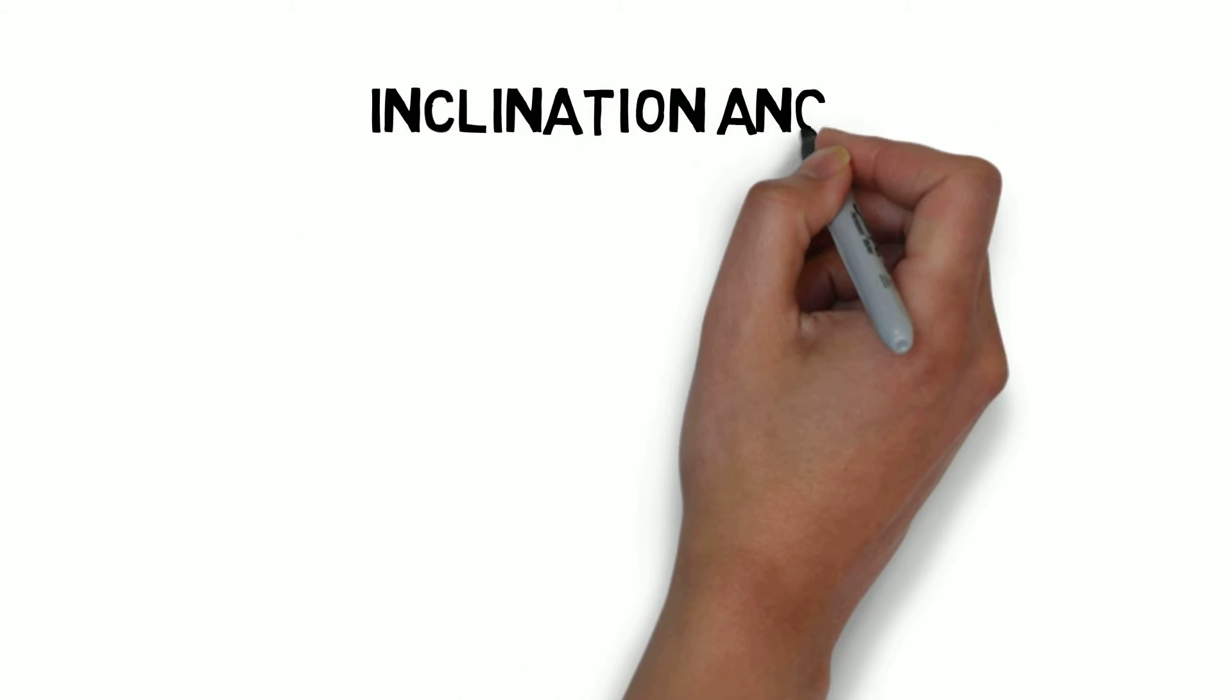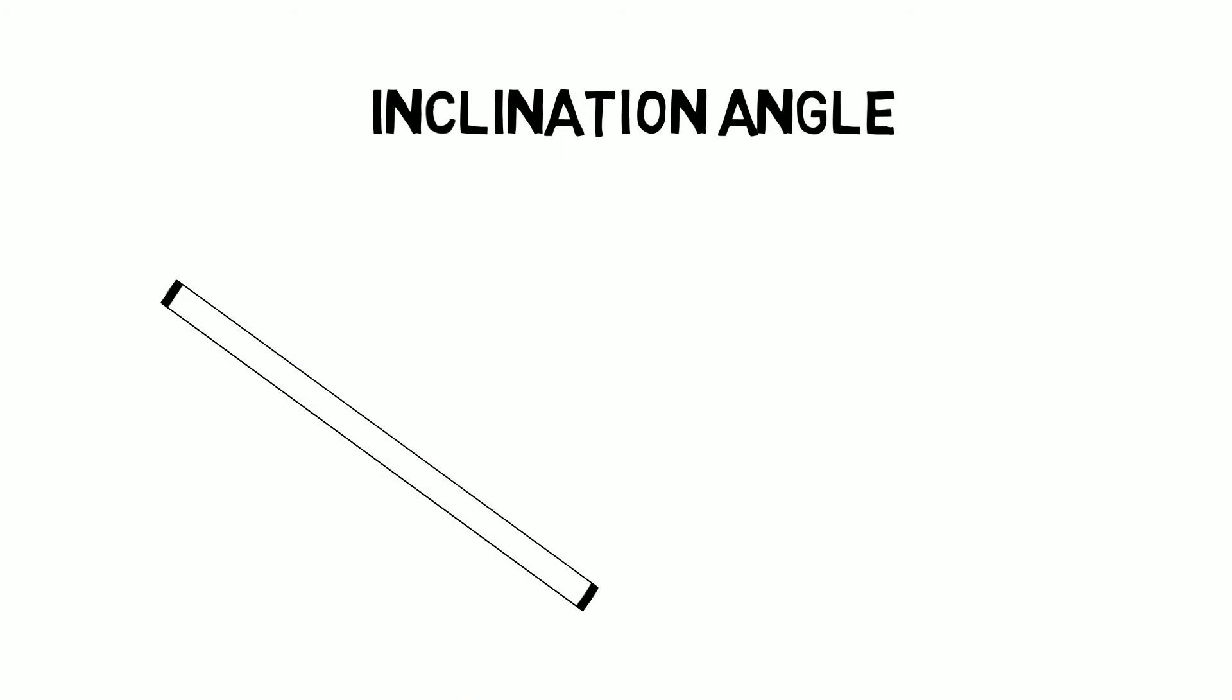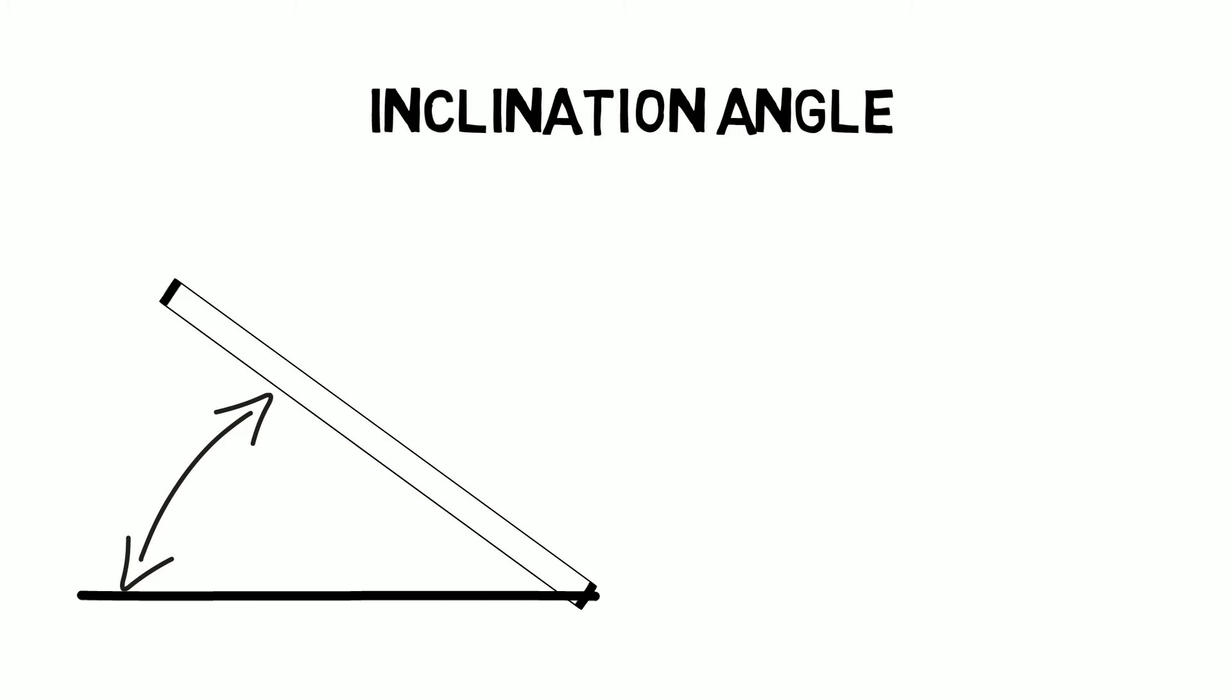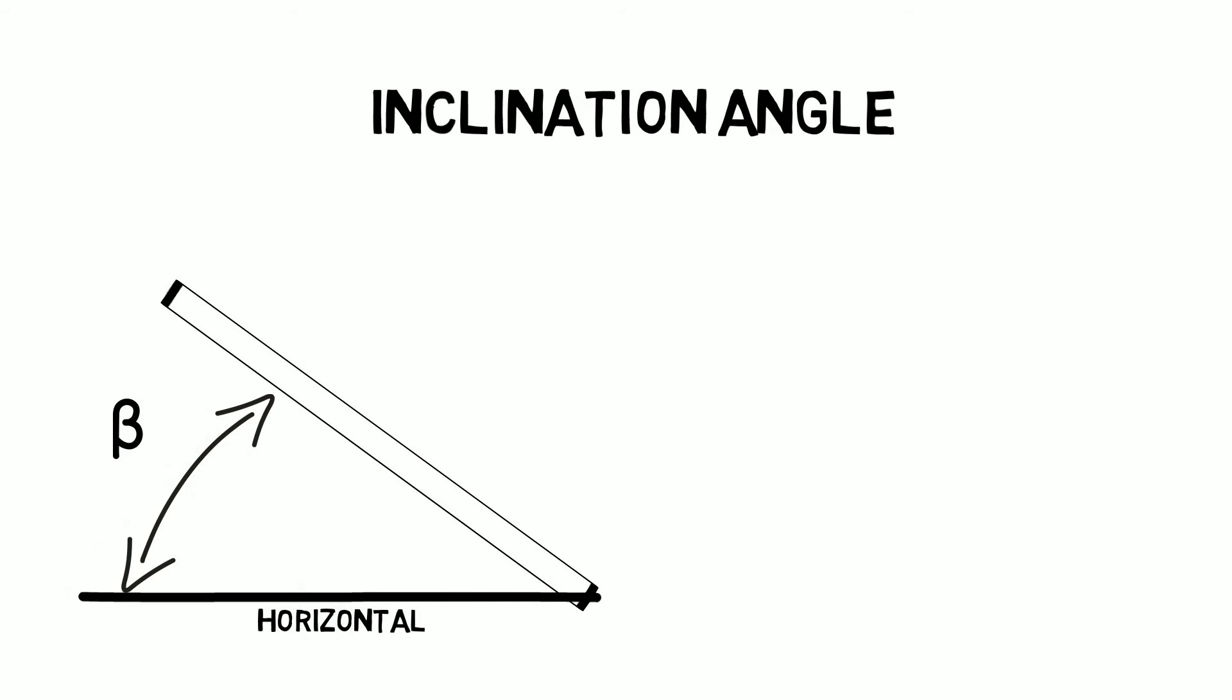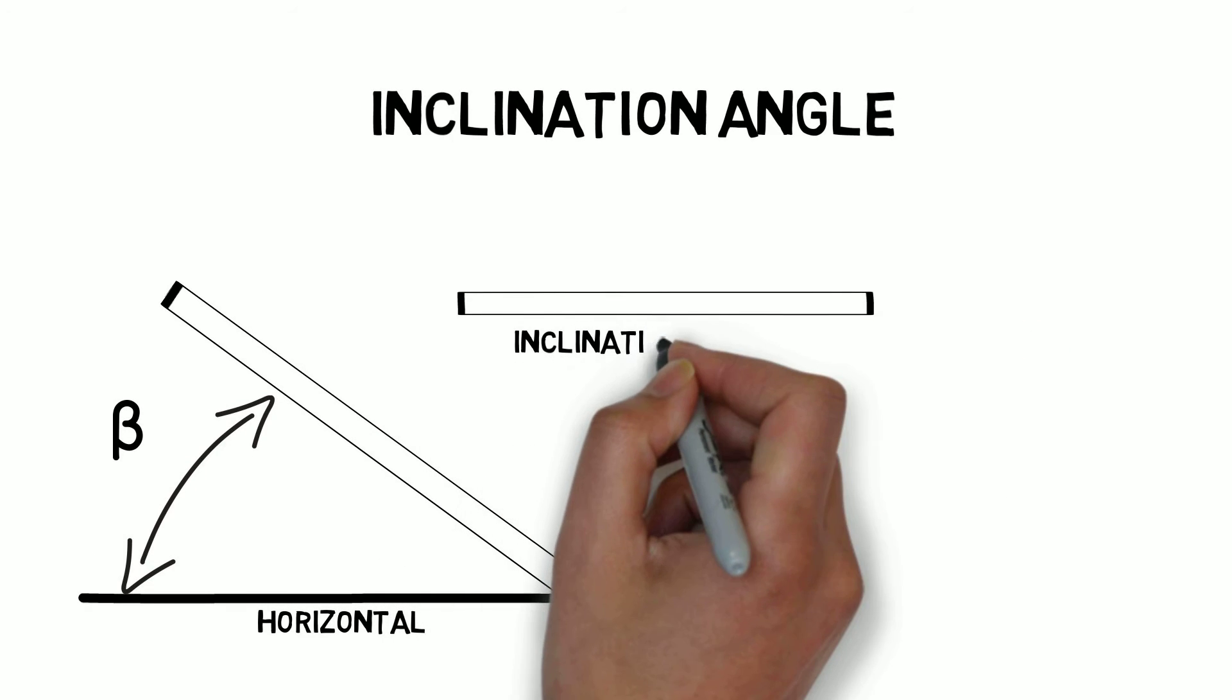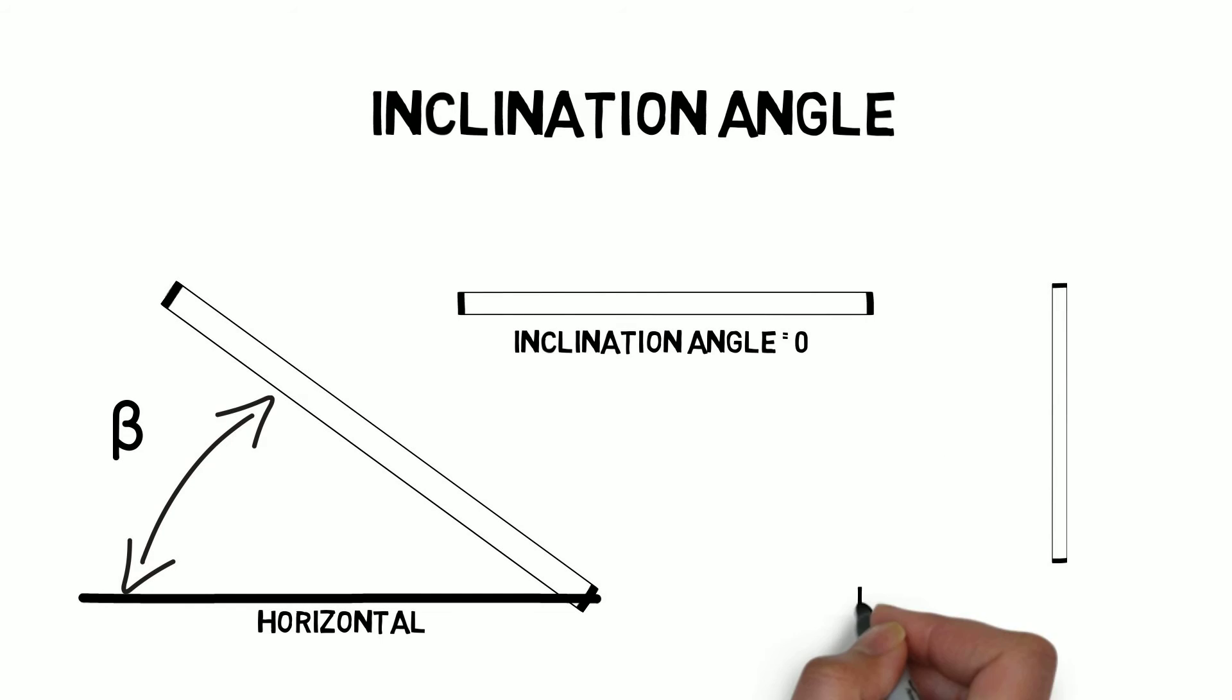Now the second angle is the inclination angle. The inclination angle is the angle of the panel from the horizontal. Therefore, if a panel is lying flat on the floor, its inclination is 0. If it's vertical, its inclination is 90.